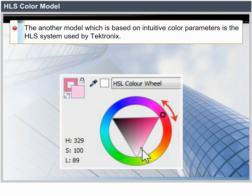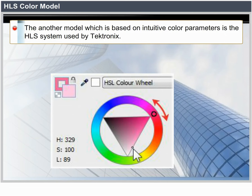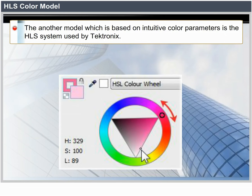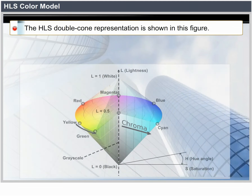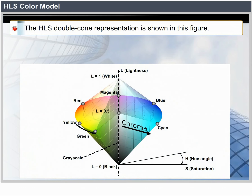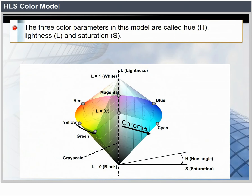Another model based on intuitive color parameters is the HLS system used by Tektronix. The HLS double cone representation uses three color parameters: Hue (H), Lightness (L), and Saturation (S).